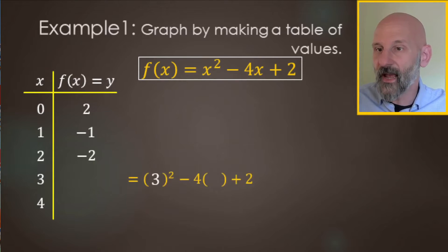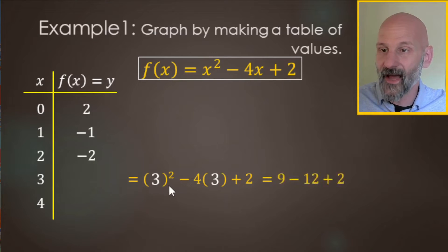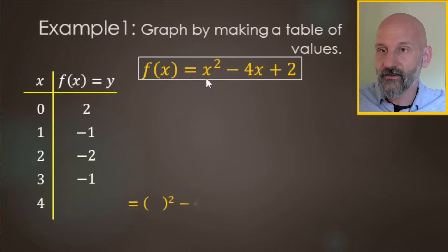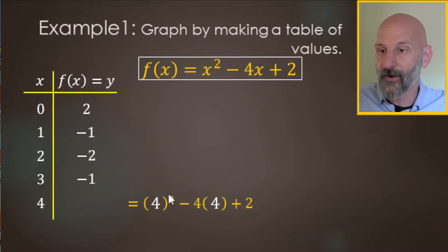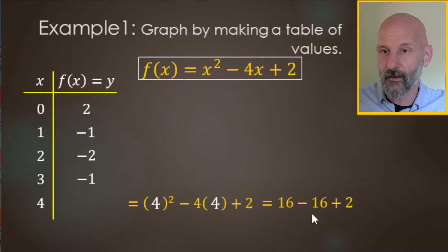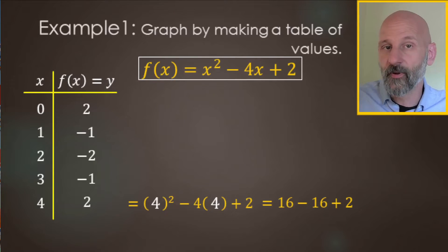For x equals three: three squared minus four times three plus two. Three squared is nine, minus four times three is twelve, plus two — that gives negative one again. For x equals four: four squared minus four times four plus two — sixteen minus sixteen is zero, plus two makes positive two. That completes our table of values.